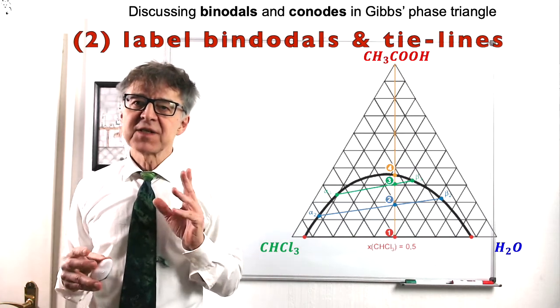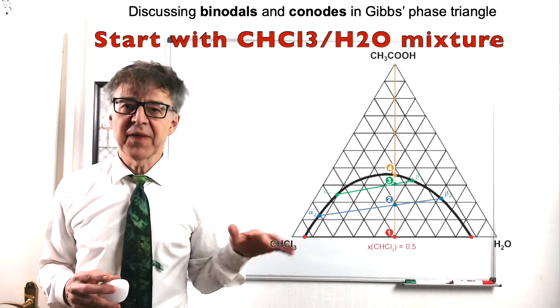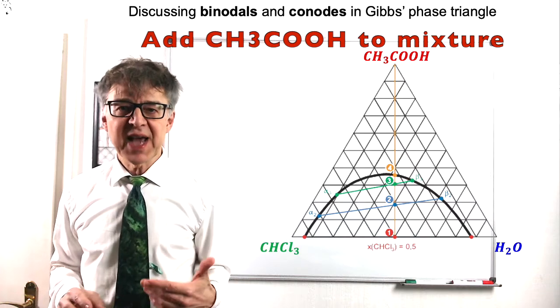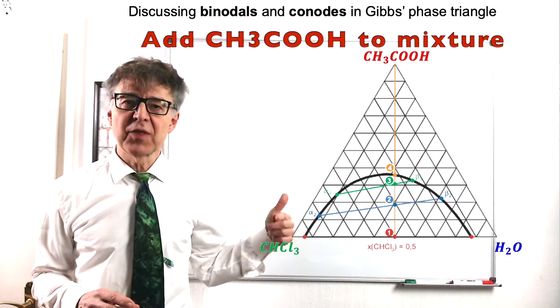If we start with a 50-50 chloroform-water mixture, we are in the heterogeneous region at point 1. If we then gradually add more and more acetic acid, we come to the points 2, 3, and 4.